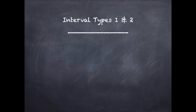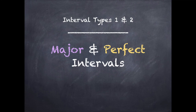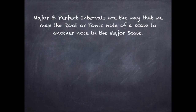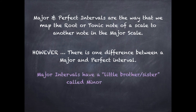Major and perfect intervals are the way that we map the root or tonic note of a scale to another note in the major scale. However, there is one difference between a major and a perfect interval: major intervals have a little brother or sister called minor intervals. Perfect intervals do not.